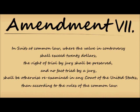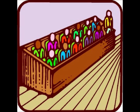The Seventh Amendment states that in suits of common law, where the value of controversy shall exceed $20, the right of trial by jury shall be preserved, and no fact tried by jury shall be otherwise re-examined in any court of the United States than according to the rules of common law. This means that if the value of a crime exceeds $20, a jury will preside over the case, working alongside the Sixth Amendment to ensure the jury is impartial.